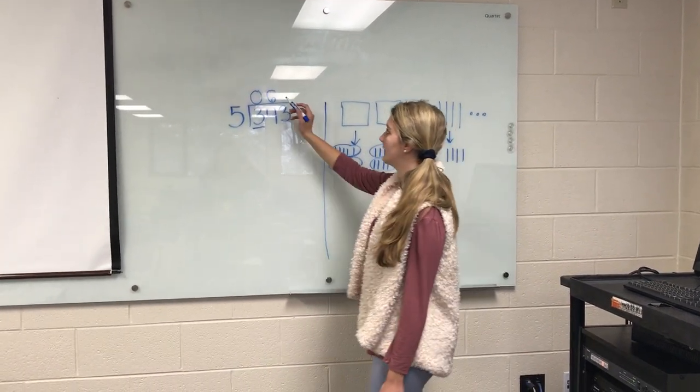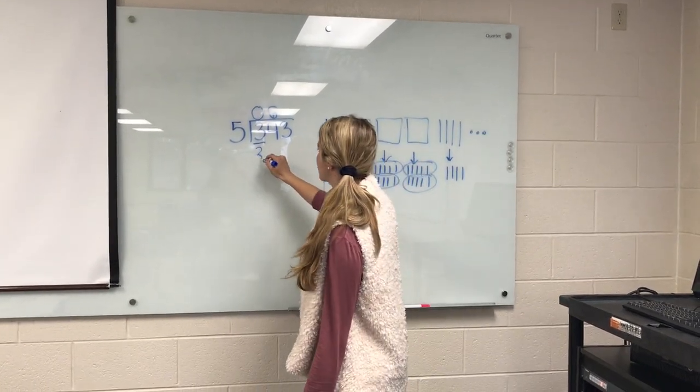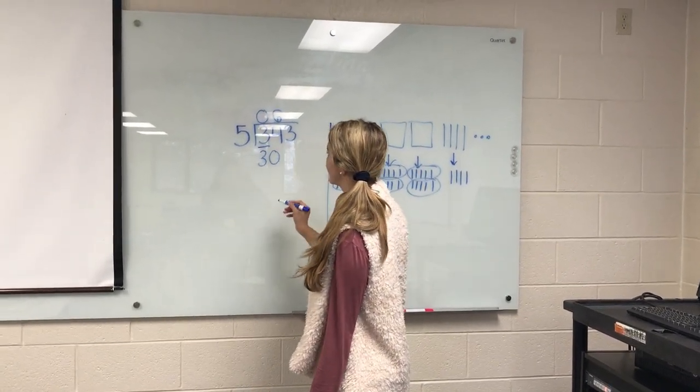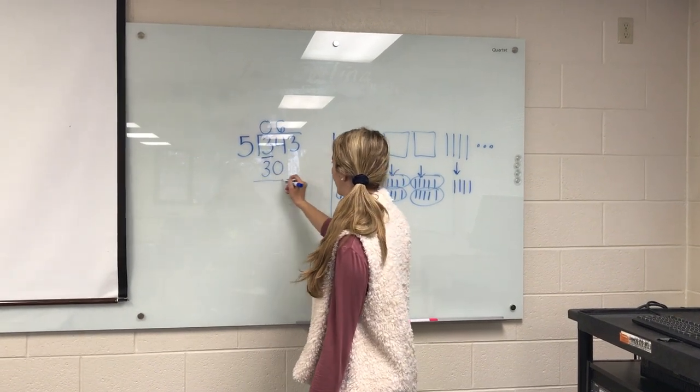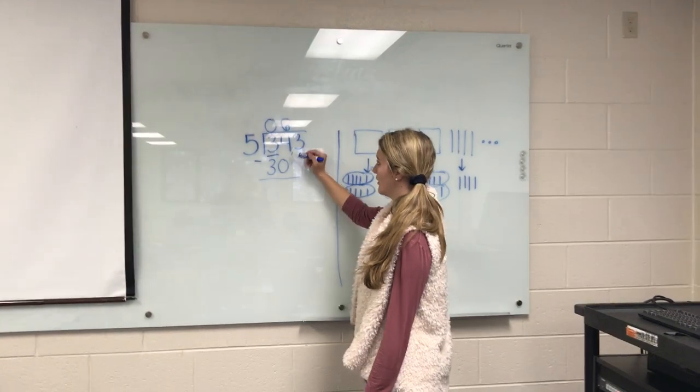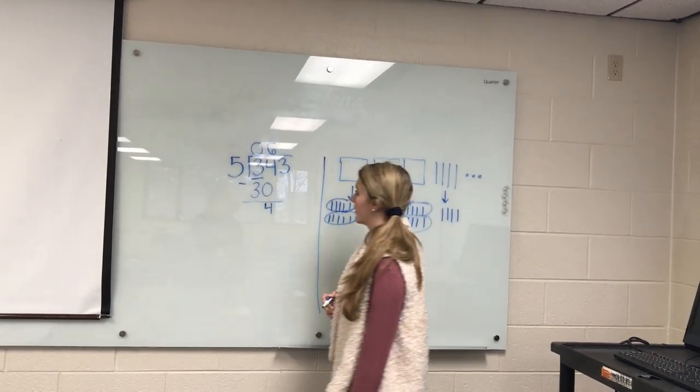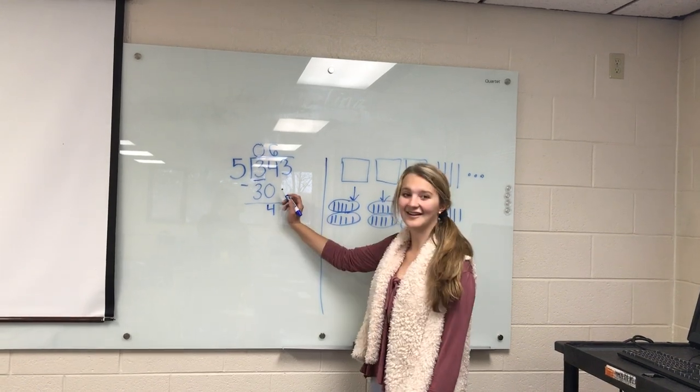Next, we are going to do 6 times 5, which is 30. We are going to record this under the 34, and we're going to see how much we have left in the subtraction column, which would be 4, because 34 subtracted by 30 is 4.